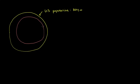So this subset right over here is 16 years and older — people who can legally work. And the number here is 237 million people.